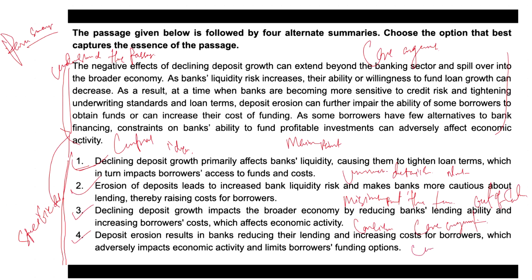After eliminating your options — first one has unnecessary detail, second misinterprets, third is concise but leaves out the core argument, and fourth is the correct answer — always cross-check with the passage. Go back to the passage and match the potential summary with the original text. Ask yourself: does the summary encapsulate the whole idea without any distortion or omission? Only then can you confirm with 100% accuracy that this is the correct answer.